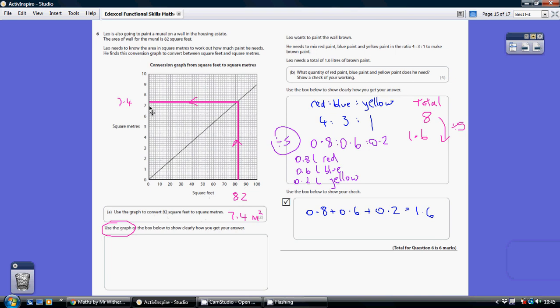And this is 2 squares above the 7. Now again, because there's only 5 squares between 7 and 8, we're going up in 0.2s. So 7.2, 7.4 and so on. So 2 squares up is an answer of 7.4 meters squared.